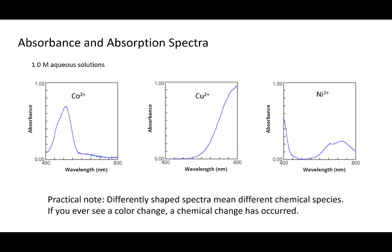Here are absorption spectra between 400 and 800 nanometers for cobalt 2+, copper 2+, and nickel 2+ ions in solution. The shapes of the absorption spectra are different, which means these are different colored solutions — cobalt looks bluish-purple, copper is pale blue, and nickel is green. If spectra show different peaks and troughs at different wavelengths, that means you have different chemical species. And if you ever see something change color, that means a chemical change has occurred.